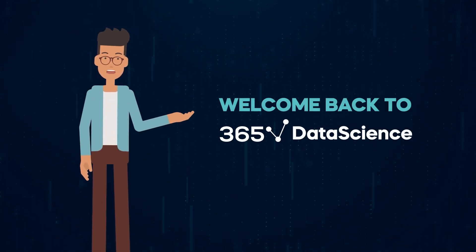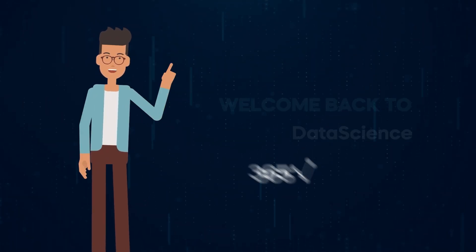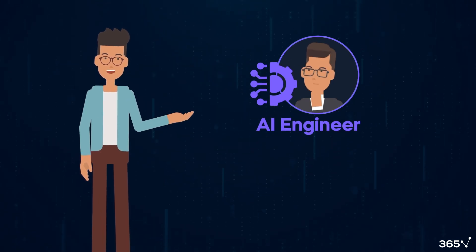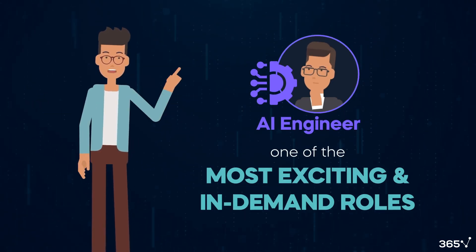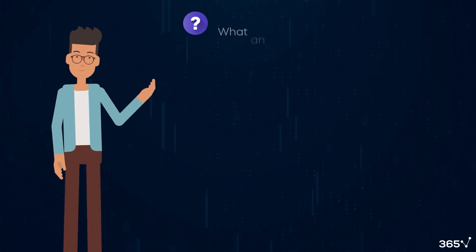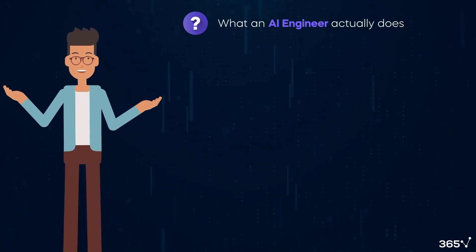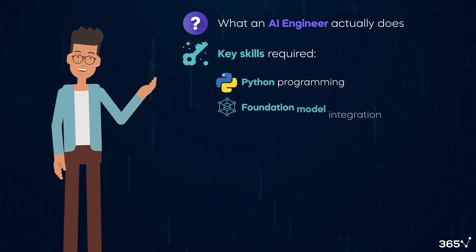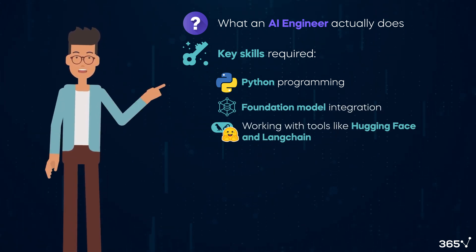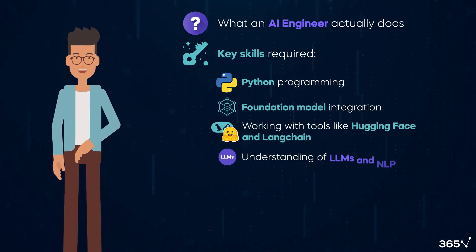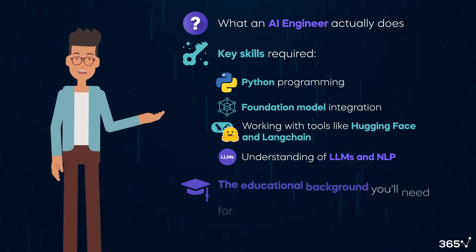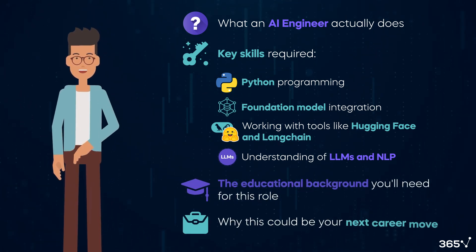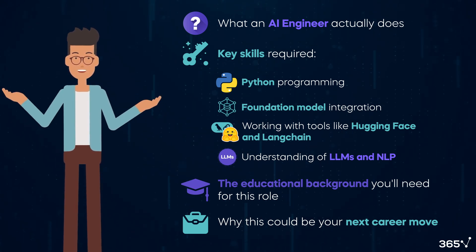Hi there and welcome back to 365 Data Science. In today's video we'll explore what it means to be an AI engineer, one of the most exciting and in-demand roles in tech right now. We'll cover what an AI engineer actually does, the key skills required including Python programming, foundation model integration, working with tools like HuggingFace and Langchain, and understanding of LLMs and NLP. Then we'll discover the educational background you'll need for this role and why this could be your next career move. Let's dive in.